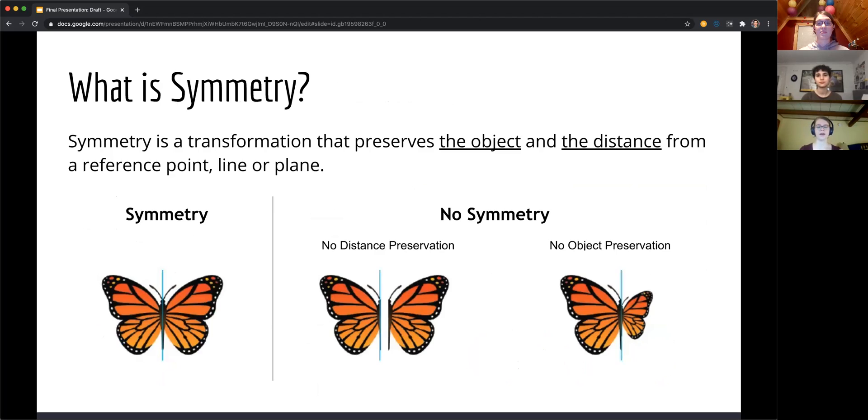So now that we've defined group theory, we can start to apply it to wallpaper groups. However, in order to do that, we first need to define symmetry as it's prevalent in all types of visual groups. Symmetry is a transformation that preserves the object and the distance from a reference point, line, or plane.